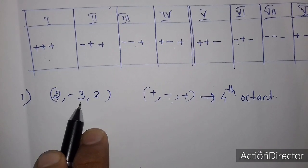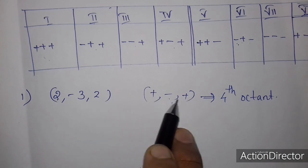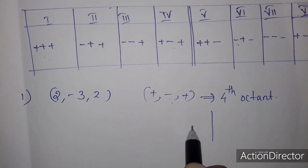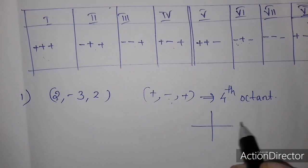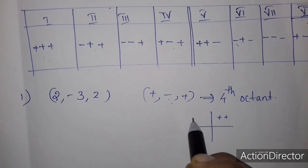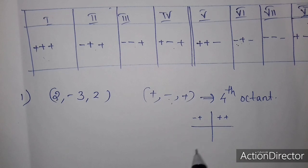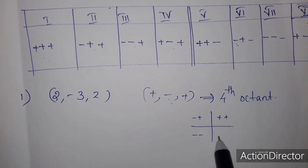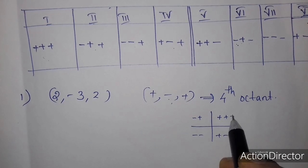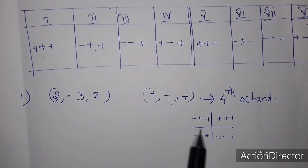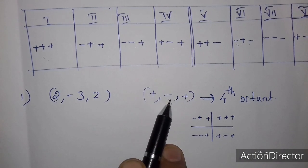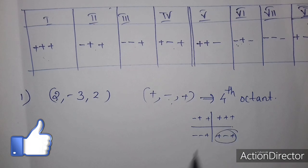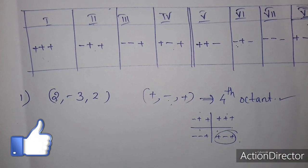For the point (2, -3, 2), the signs are plus, minus, plus. On the XY axis we identify: x is positive, y is negative, z is positive — that is plus, minus, plus. Counting through first, second, third, fourth — this gives us the fourth octant as the answer.